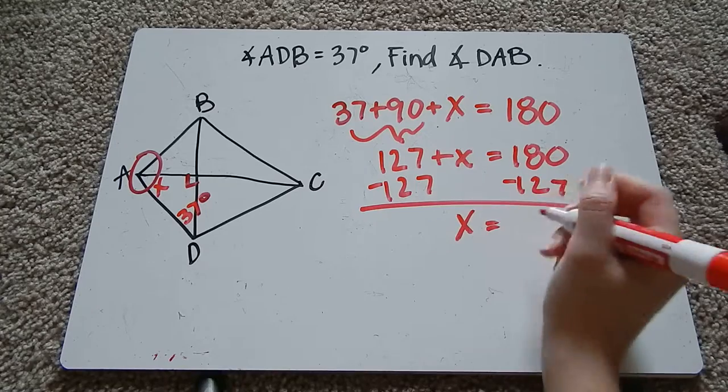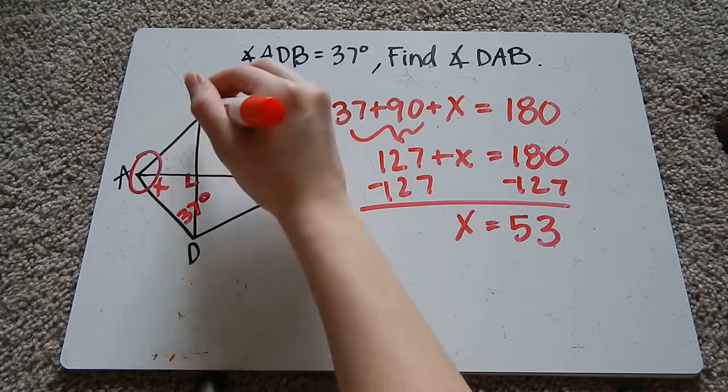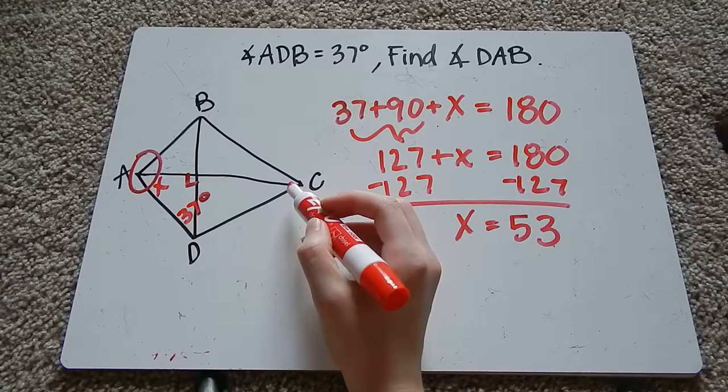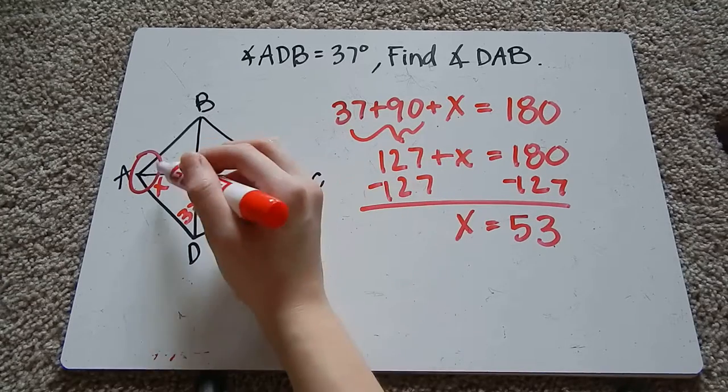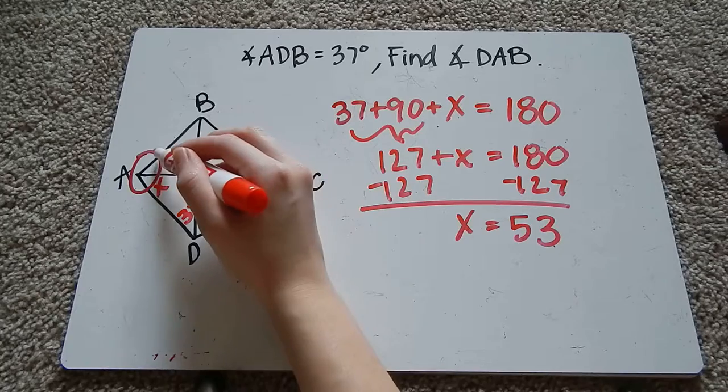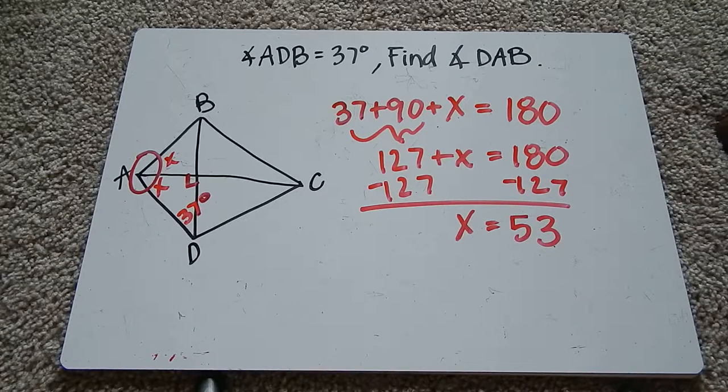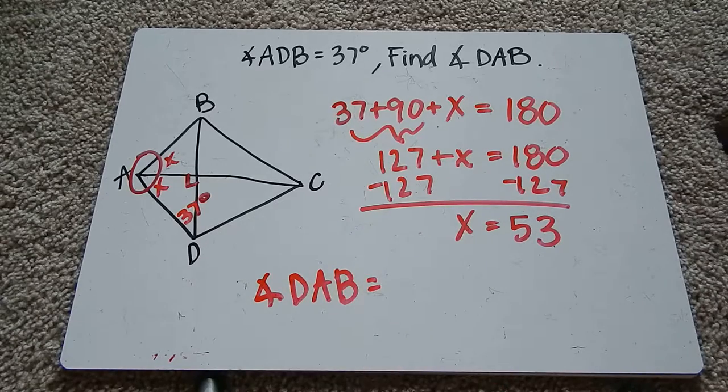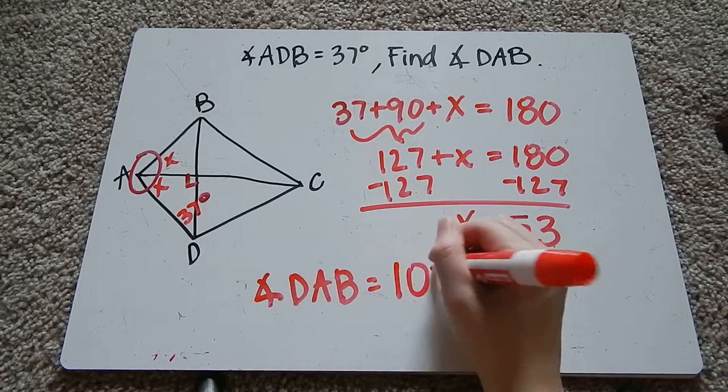And we get x is equal to 53. Now that's not our answer because I want this whole thing. So what I know about this diagonal here is that it bisects the angles, that was one of the properties. Since it bisects the angles that it intersects, that means it's going to bisect this angle, which means this angle and this angle are congruent so they're both x. So to find angle DAB, I need to add 53 and 53 since they're the same, or just multiply 53 times 2. When I do that I get 106 degrees.